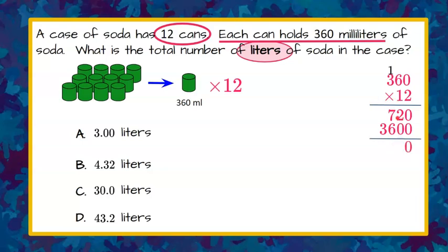Now we're going to add. 0 plus 0 is 0. 2 plus 0 is 2. 7 plus 6 is 13. Carry the 1. And 1 plus 3 is 4. So we can now bring that up here and know that we are going to have 4,320 milliliters in the entire case.